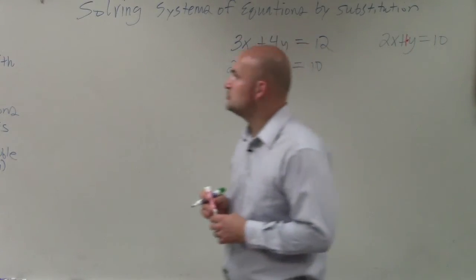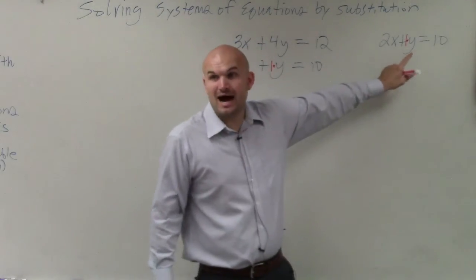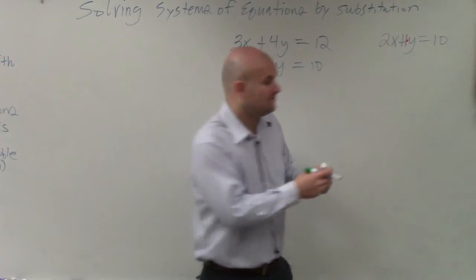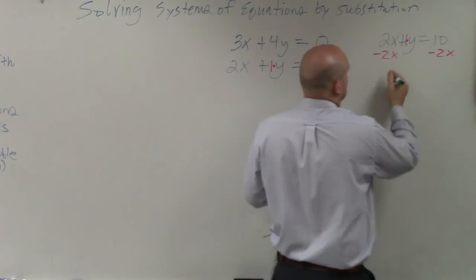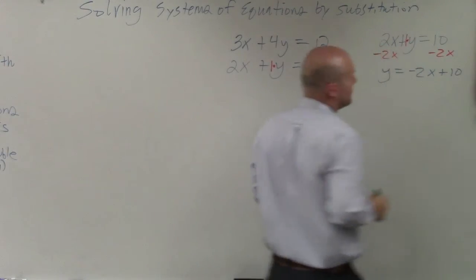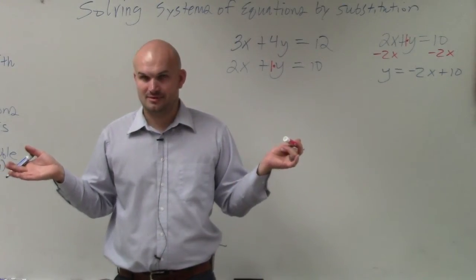Then step number two, solve for the variable using inverse operations. So we identified y was the one with the coefficient of 1. Now we need to solve for it. So all we need to do to solve is to subtract 2x. So y equals negative 2x plus 10. Does everybody follow me for this?